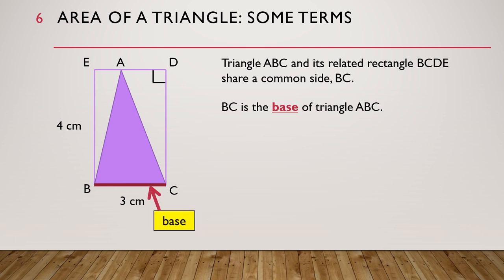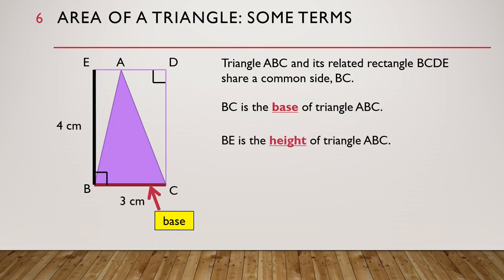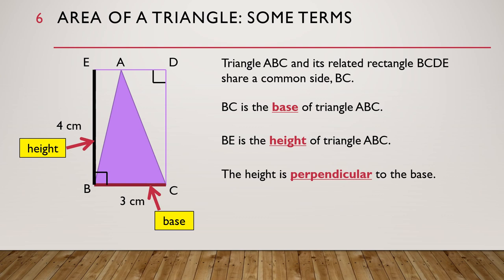The side BE is known as the height of triangle ABC. Notice that the height is perpendicular to the base. Perpendicular means at right angle. This is very useful when we are trying to find the height and the base of the triangle in other questions.